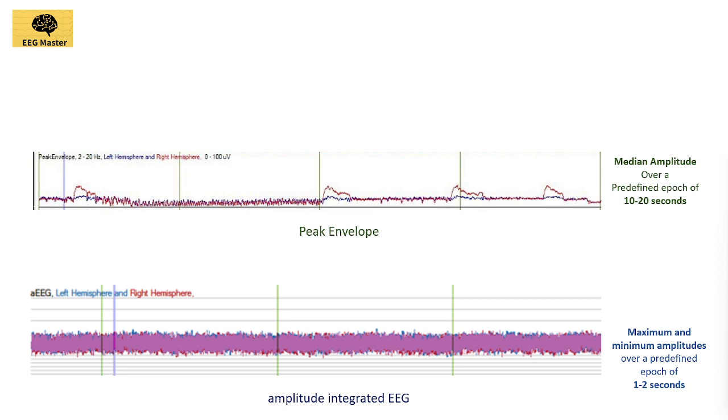Since envelope trend plots median amplitude for a longer predefined epoch, for example 10 seconds compared to 1-2 seconds as in amplitude-integrated EEG, it filters out brief fluctuations in amplitude that may arise due to artifacts.